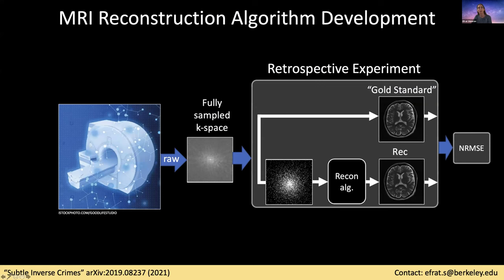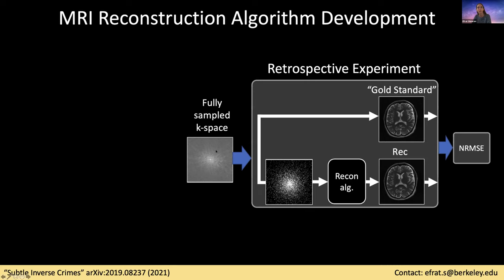This is my disclosure — our lab receives research support from GE Healthcare. MRI reconstruction algorithms are often evaluated in retrospective experiments. This is the general structure of a retrospective experiment, and such experiments often rely on fully sampled k-space data. The data are subsampled using a variable density mask, and the result of a reconstruction algorithm is quantified by comparing it with a gold-standard image using error metrics such as the normalized root-mean-square error.